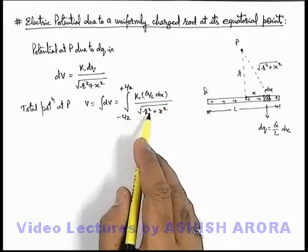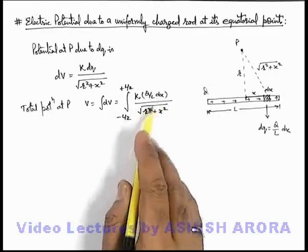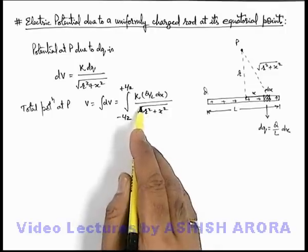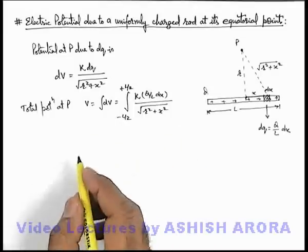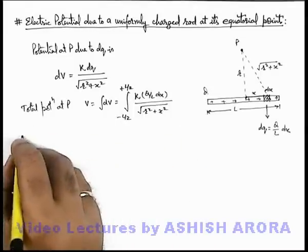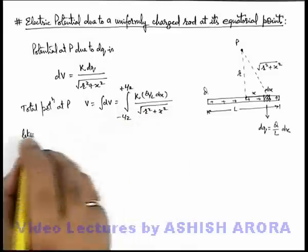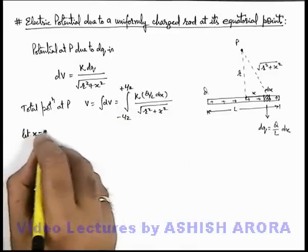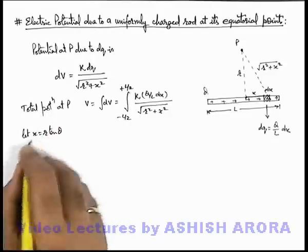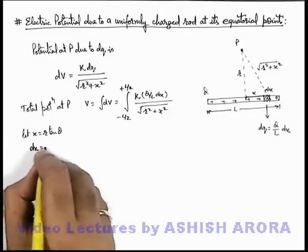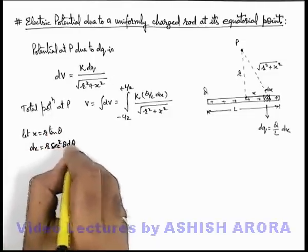Here I can integrate it directly, but I'll use the same method which we already studied in different cases for substitution. Here we use: let x = r tan θ. Then this situation will get dx = r sec² θ dθ.